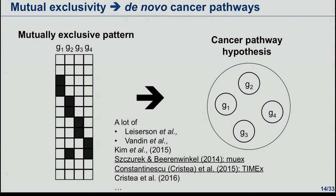This is how cancer pathways show mutually exclusive patterns. A number of different groups started exploiting this phenomenon the other way around — looking for mutually exclusive pathways in the data and proposing cancer pathway hypotheses. There are papers by Leiserson, Fabio, Ben Raphael, Teresa's group, and also our mutual exclusivity camp with papers originating from Niko's group.